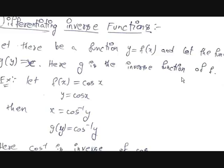For an example of an inverse function, take f(x) = cos(x). That means y = cos(x). If we apply cos inverse on both sides, we get x = cos⁻¹(y), which is nothing but g(y) = cos⁻¹(y). So cos inverse is the inverse function of cos. Similarly, sine inverse is the inverse function of sine.